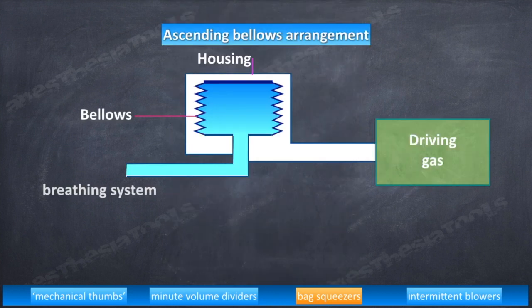The one we discuss now is ascending bellows type. In the event of a circuit disconnect or significant leak, an ascending bellows would not fill or would improperly fill during exhalation. This provides clinicians a visible monitor of ventilator function. Because of the improved patient safety, this type of bellows is generally preferred but does not represent a standard according to the latest document by ASTM.